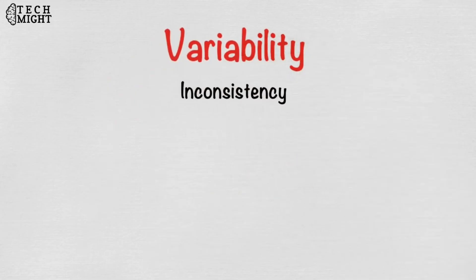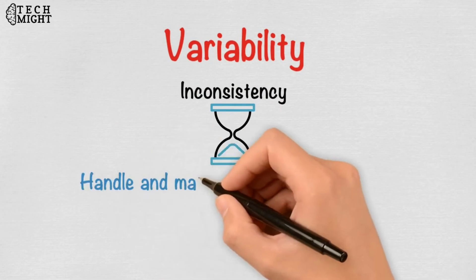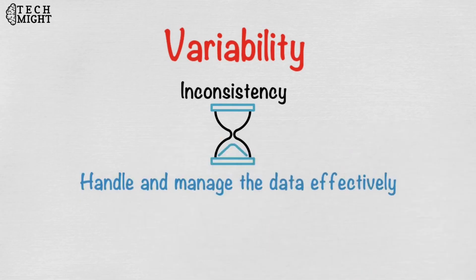Variability refers to the inconsistency which can be shown by the data at times, thus hampering the process of being able to handle and manage the data effectively.